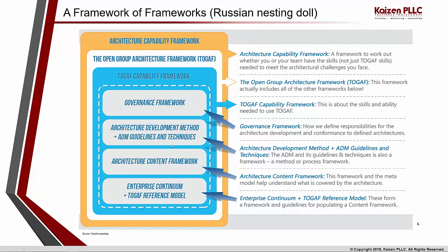The process framework is the methodology itself — the Architecture Development Method with its ADM guidelines and techniques. The content framework provides meta models, deliverables, artifacts, and building blocks that an enterprise can use to develop their own content. Finally, the enterprise continuum and TOGAF reference model form a framework and guidelines for populating the content framework, classifying organizations from foundational generic architectures to specific organization-level architectures. The skills framework, though not shown in this slide, defines roles, responsibilities, and knowledge areas as provided by TOGAF.